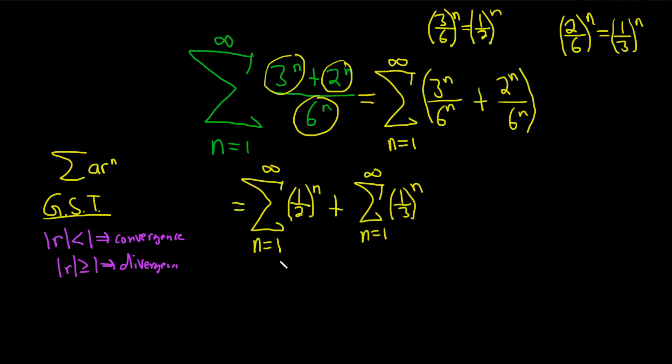So if you look here in our first sum, r is 1 half, and so the absolute value of r is simply the absolute value of 1 half, which is just 1 half, and that's less than 1. So our first series converges by the geometric series test. So this one here will converge by GST because the absolute value of 1 half is 1 half, which is less than 1.